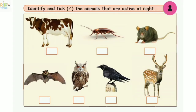Activity number 3: Identify by putting a tick on the animals that are active at night. First, cow — cow is not active at night. Cockroach — active. Mouse/rat — active. Bat — this is active. Owl — this is active. Crow — crow is active in the daytime, so it is not ticked. Deer — not active at night.